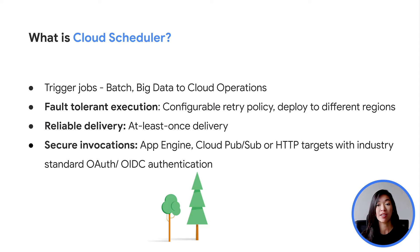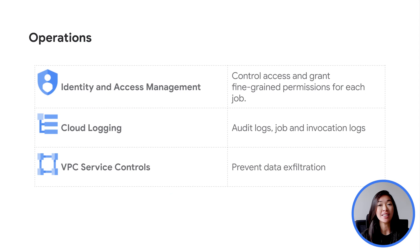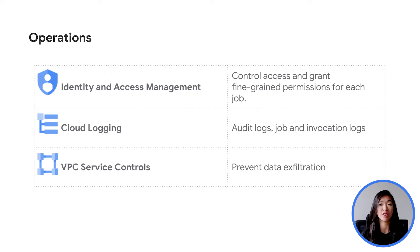It also provides reliable delivery with at-least-once delivery guaranteed to your job targets. It supports targets such as App Engine, Cloud Pub/Sub, and HTTP endpoints, allowing jobs to trigger to Compute Engine, Google Kubernetes Engine, and on-premises resources. It also uses standard authentication for you to invoke your schedules in a secure fashion. Similarly, Cloud Scheduler also uses Identity and Access Management for access control, and publishes logs at the start and end of each execution for you to look at the actual execution times and check job configurations. You can also integrate Cloud Scheduler with VPC Service Controls, which currently support Cloud Pub/Sub targets, for you to set up a secure perimeter to guard against data exfiltration.